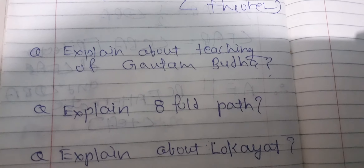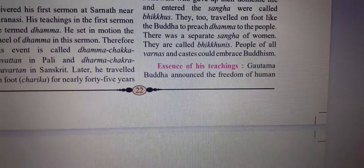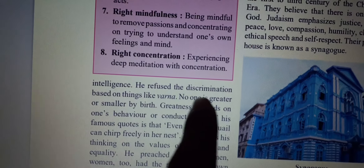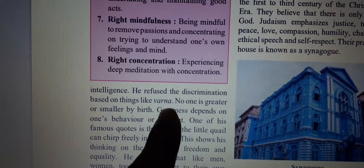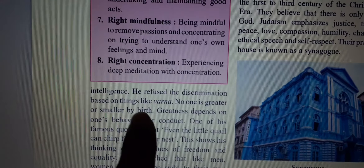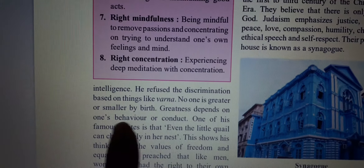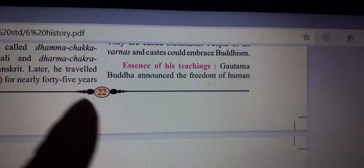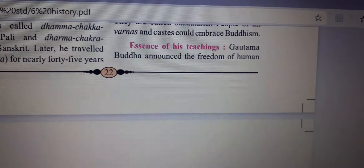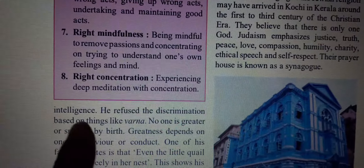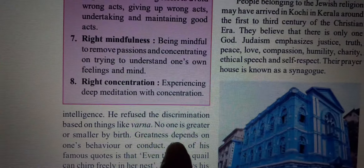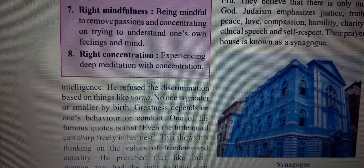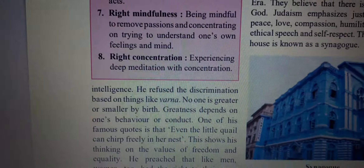The answer for the first question — explain about Gautam Buddha's teaching. Gautam Buddha announced the freedom of human intelligence. First point: he refused discrimination based on things like varna. Second point: no one is greater or smaller by birth. Third point: greatness depends on one's behavior or conduct. These four points are the answer to the first question.